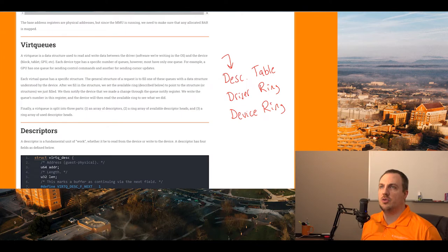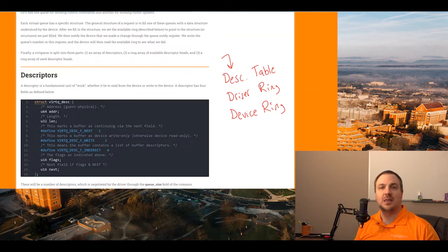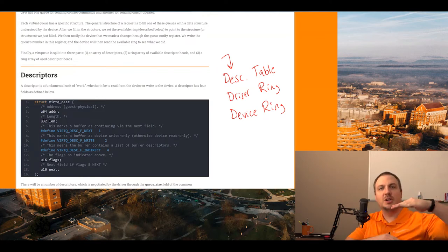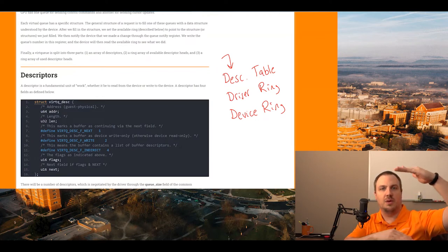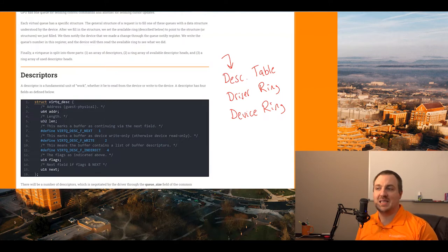The VirtQ descriptor looks like this structure. It has four fields: a 64-bit physical address, a length (that's the size), flags, and next. So essentially, you specify the starting address and how much data you want — the starting address and length give you the range of memory addresses you want to pass to the device to make a request. There are only three flags: next, write, and indirect.